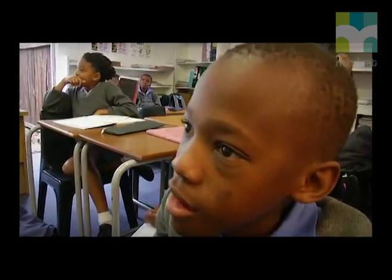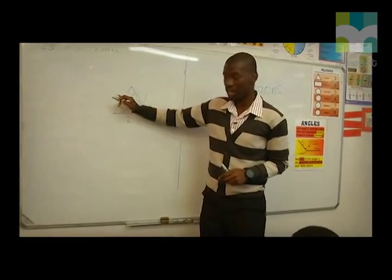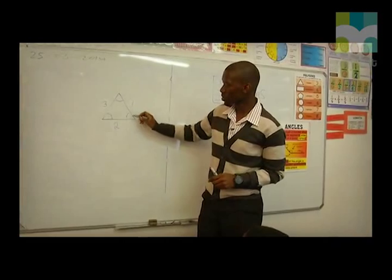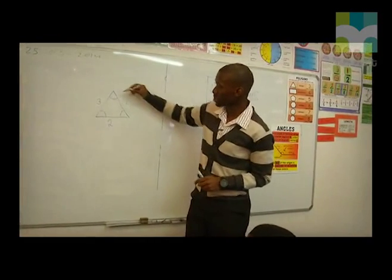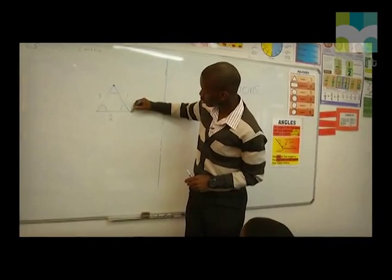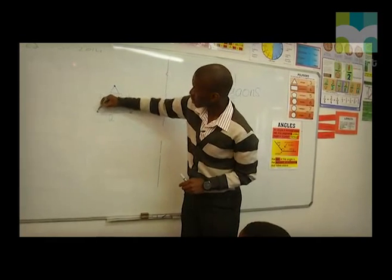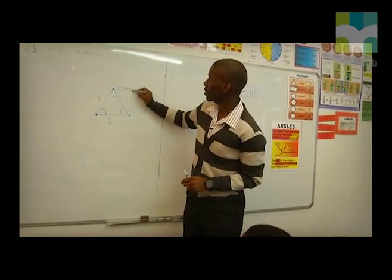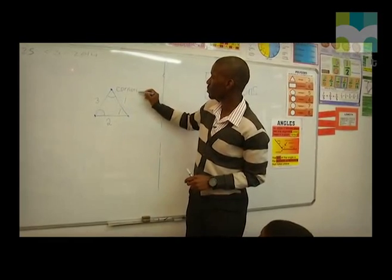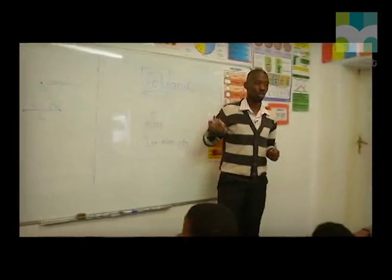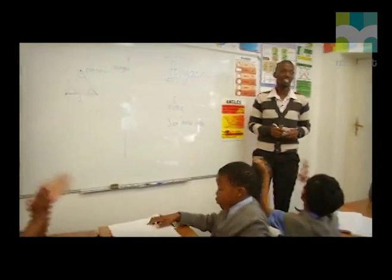Hey, that's a very good answer. We said it has one, two, three sides. It also has one, two, three angles. The other thing it has is three corners — one, two, three. Who knows the name of those corners? They are vertices. Let's clap hands for her.